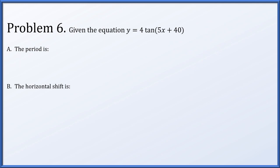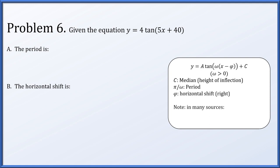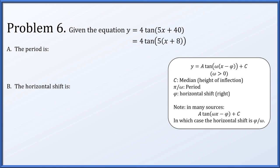Given the equation y equals 4 times the tangent of 5x plus 40, we're asked for the period and horizontal shift. For a function a times the tangent of omega times x minus phi plus c, the period is pi over omega — not 2 pi over omega — and phi is the horizontal shift to the right. Factoring the 5 out inside the tangent gives 4 times the tangent of 5 times the quantity x plus 8. So the period is pi over 5, and the horizontal shift is 8 units left.